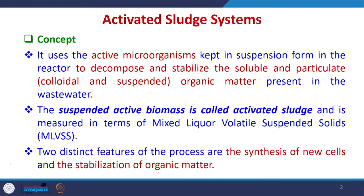This process is always used after primary treatment, where physicochemical treatment is done. After primary treatment, we try to remove the organic content mostly in the secondary treatment. The activated sludge process is the most common process used for removal of most organics present in the wastewater after removal of suspended and dissolved solids in the primary treatment. Activated sludge systems use active microorganisms kept in suspension in the reactor to decompose and stabilize the soluble and particulate organic matter present in the wastewater.